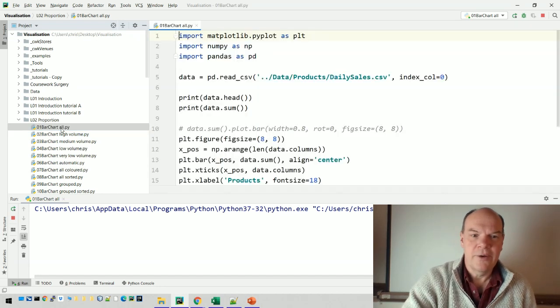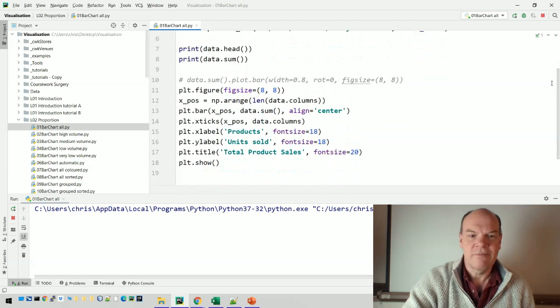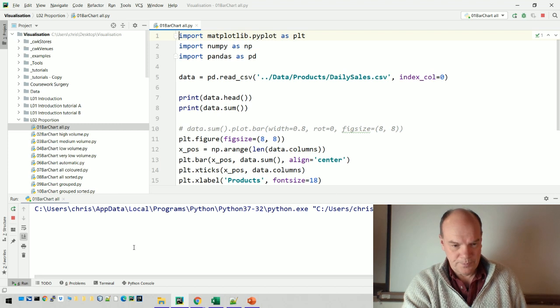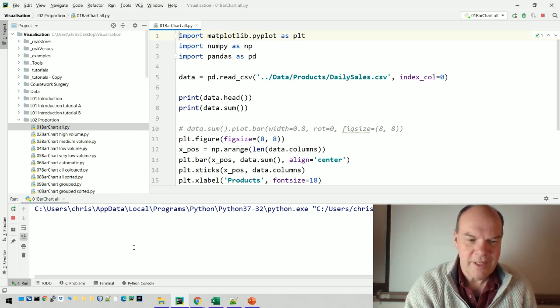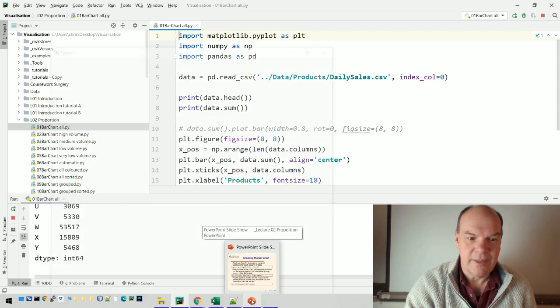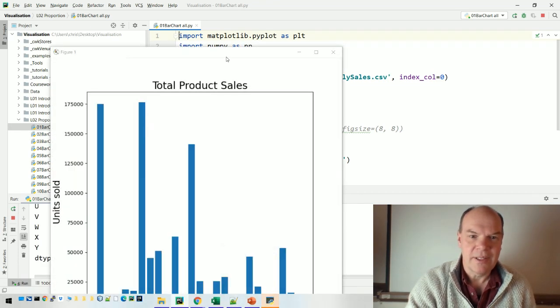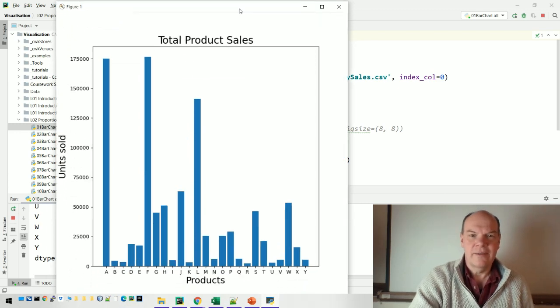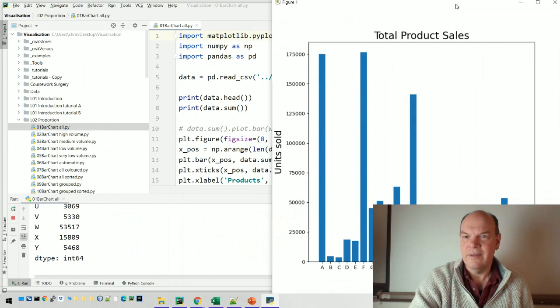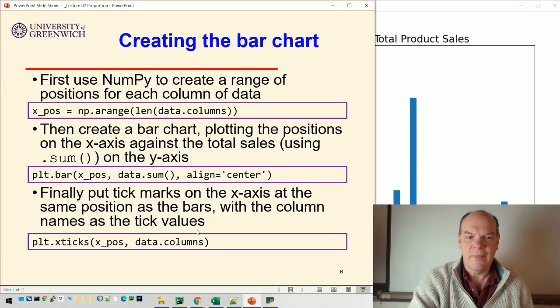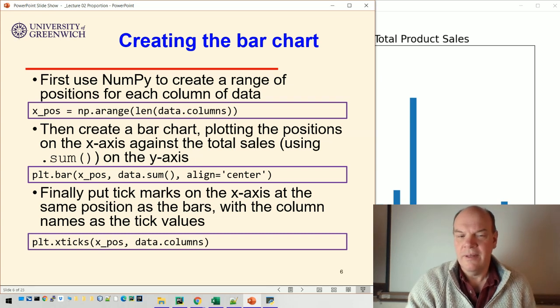So there's the code, the whole code is this. There you can see all of it, just 15, 18 lines of code. And when I run it, give it a moment to think about that. It's going to pop up the chart which we've just seen. There it is, that's the eight by eight figure size. And then you can see, let me move it over to this side while we look at the slides.